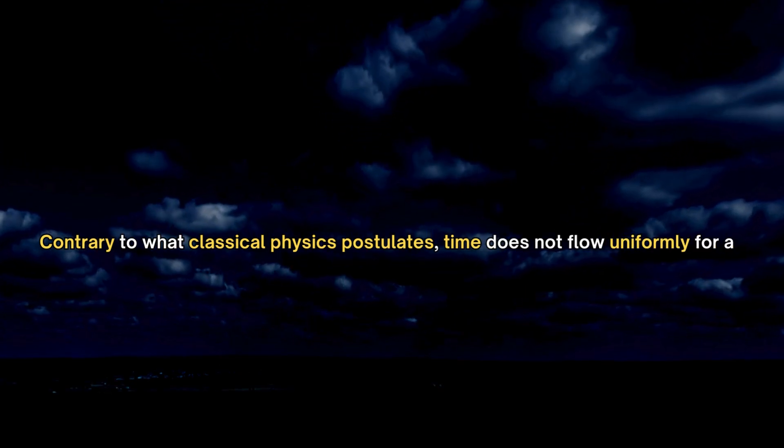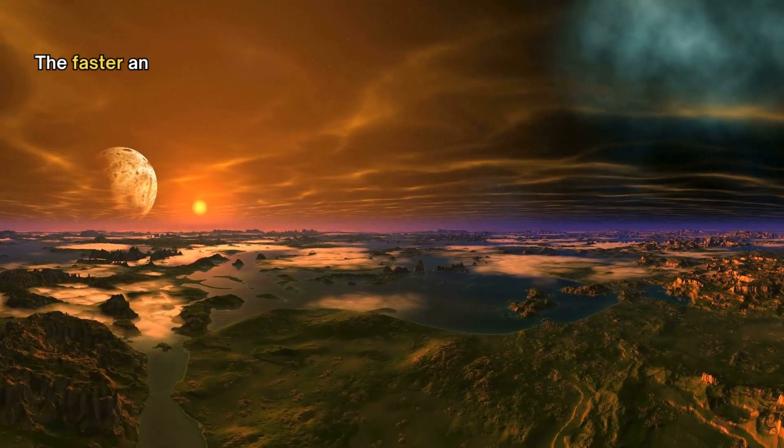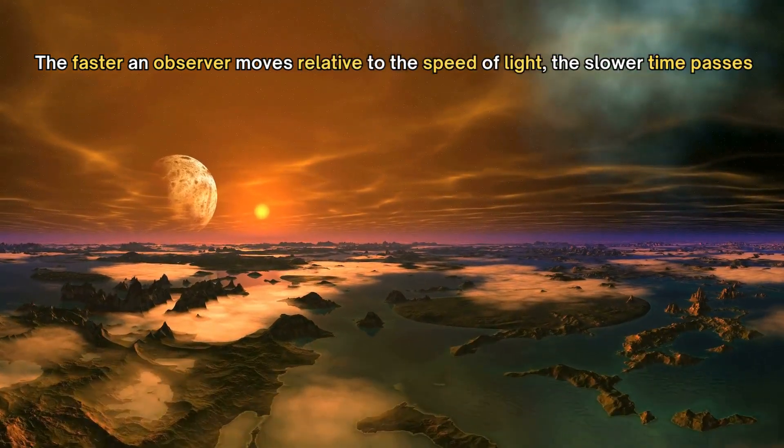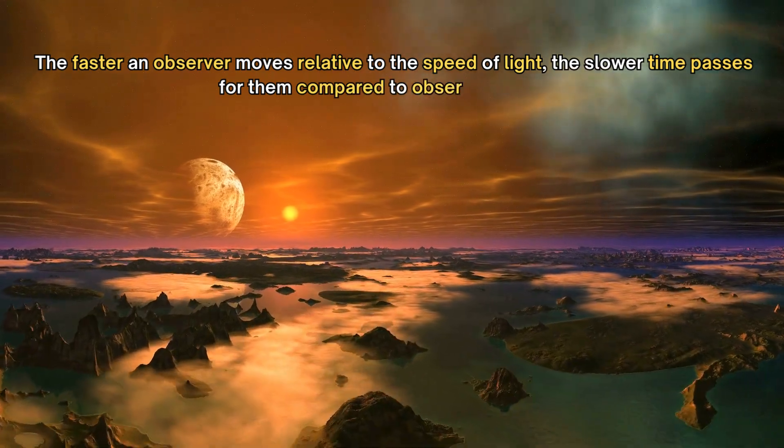Contrary to what classical physics postulates, time does not flow uniformly for all observers. The faster an observer moves relative to the speed of light, the slower time passes for them compared to observers at rest.